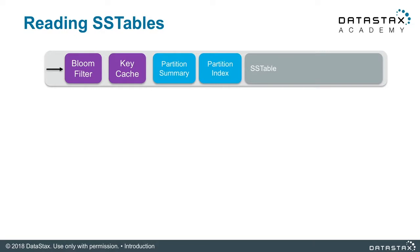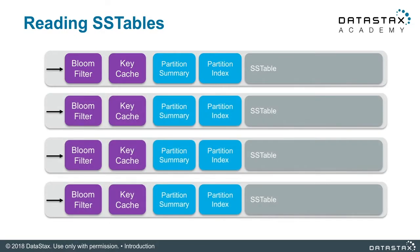Here's one SSTable — you see we have a bloom filter, a key cache, partition summary, partition index, and an SSTable. All of these SSTables have all these groupings of data structures for every single individual one. Compaction is the process of combining all of these SSTables into one SSTable. Let's first look at how Apache Cassandra compacts two individual partitions from two SSTables together.